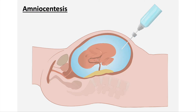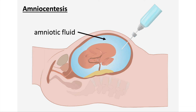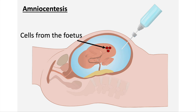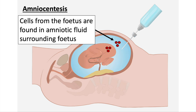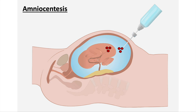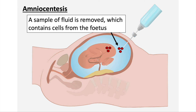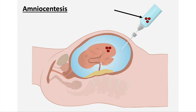We're now going to talk about amniocentesis. So between 15 and 16 weeks, a woman can have her fetus checked for genetic disorders. This here is the amniotic fluid in the amniotic sac. Cells from the fetus are found in the amniotic fluid surrounding the fetus. A needle is going to be injected into the amniotic sac to extract some amniotic fluid which contains fetal cells, so a sample of fluid is removed which contains the cells from the fetus.